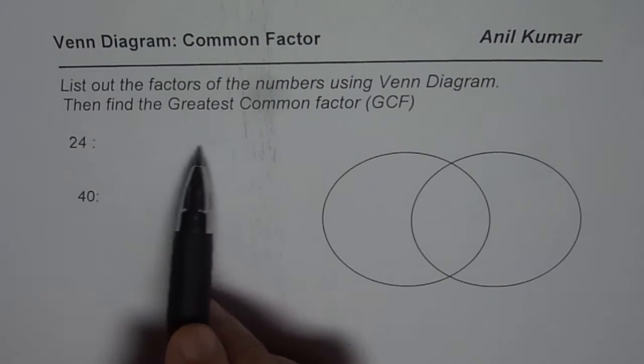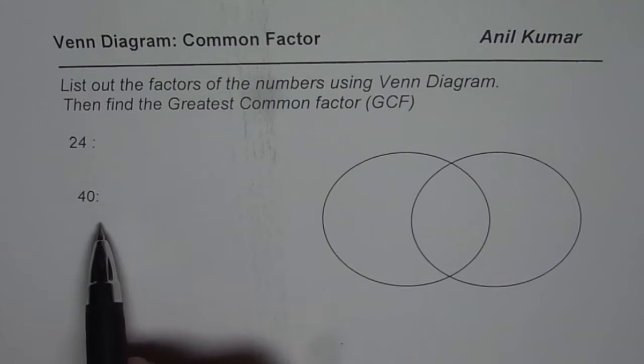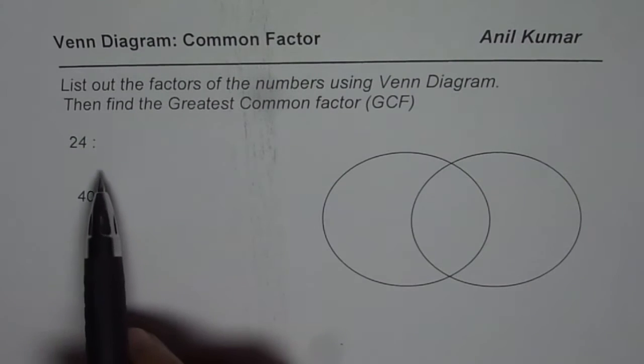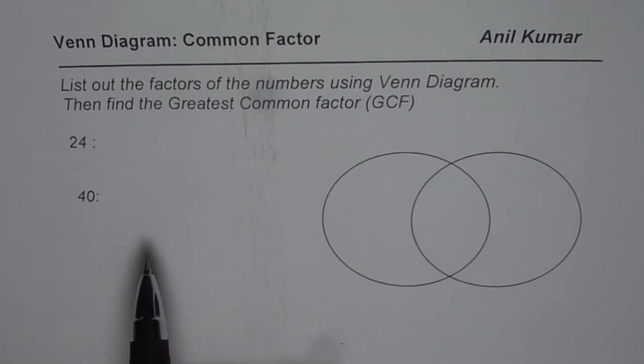find all possible factors of the numbers given to you. You can make that rainbow to ensure that you have all factors listed. Once you list factors, find which are common factors, then place them in the Venn diagram. From the Venn diagram you can see the greatest common factors and then write your answer. So you can